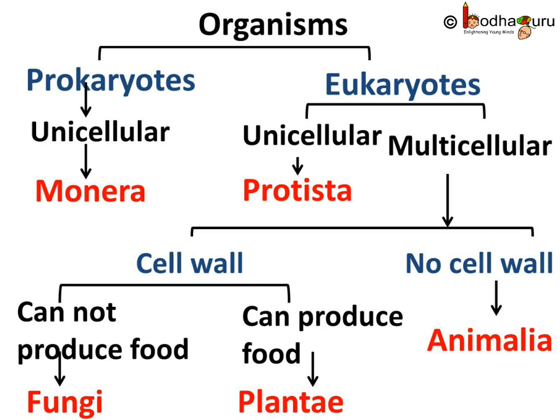Thus, this way we arrived at the five kingdoms as proposed by Robert Whittaker. But if you see, it is at a very basic level — that is at the cellular level. Such broad categorization cannot do justice to the huge diversity in nature. So, further divisions were made based on higher level characteristics, and this we will continue in the next session. Till then, bye-bye.